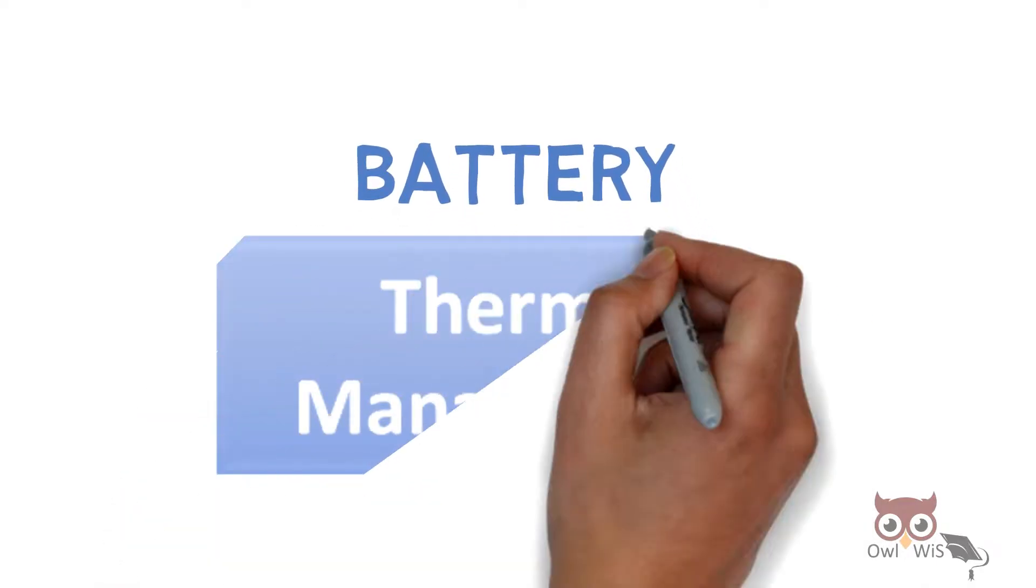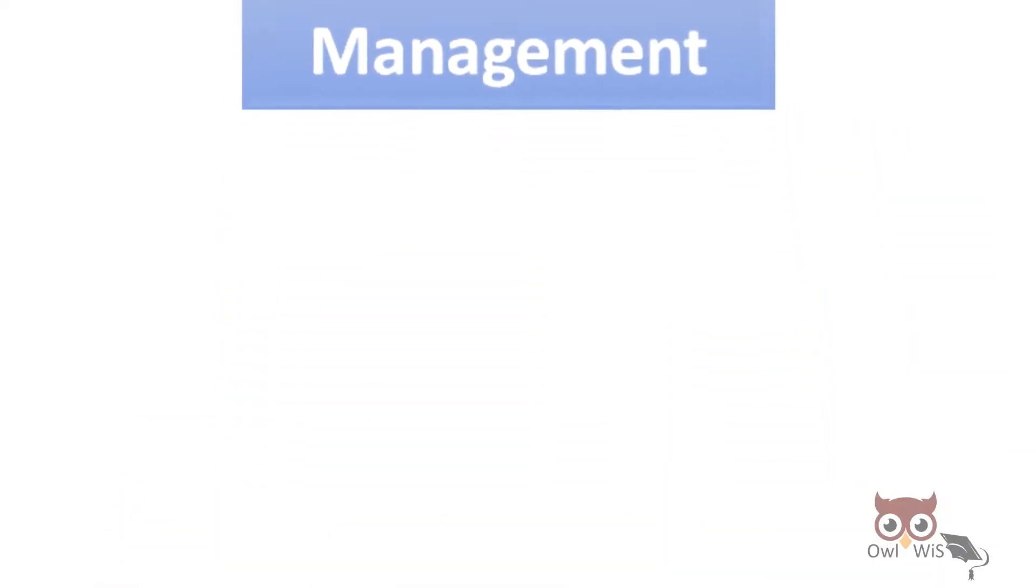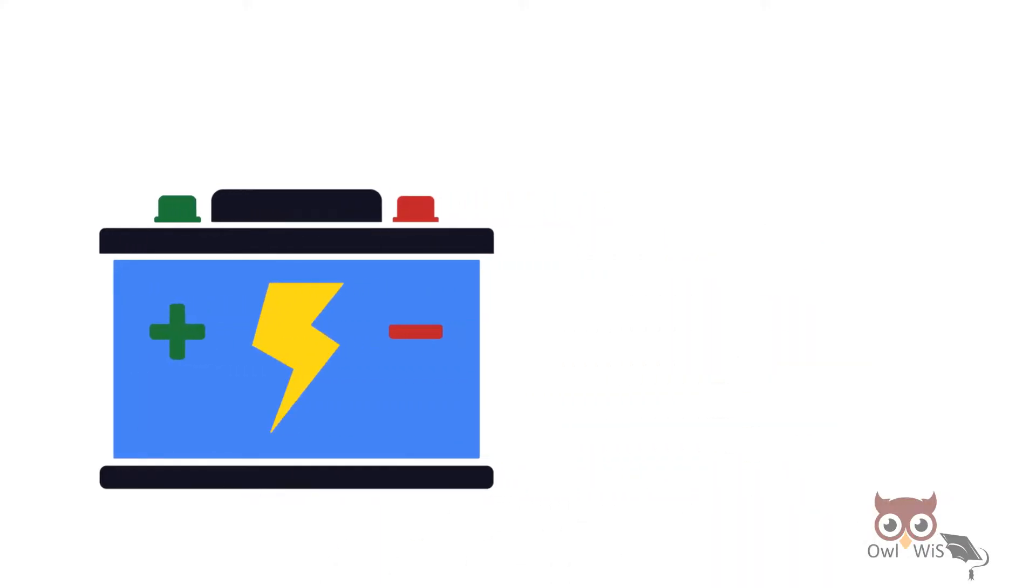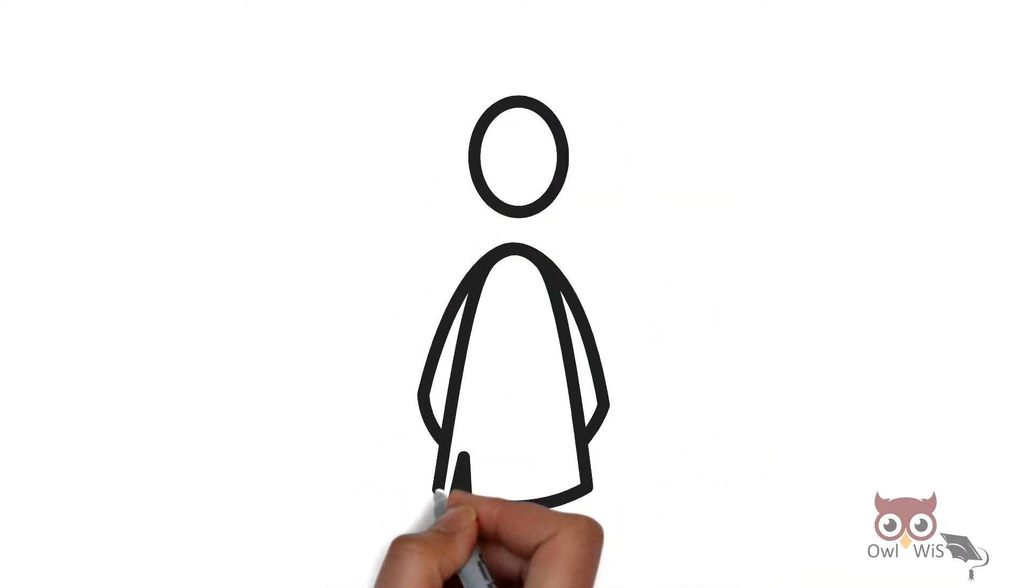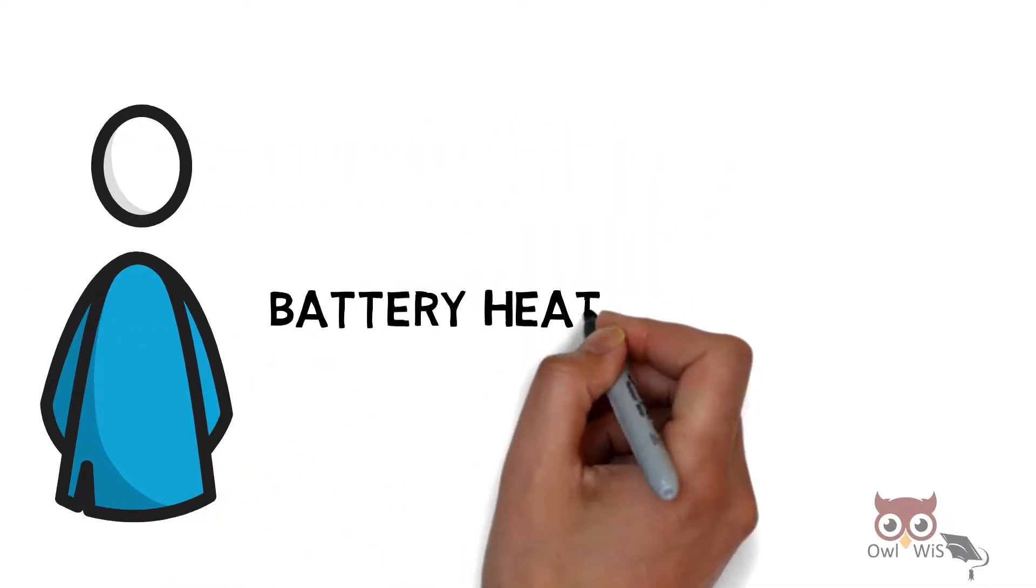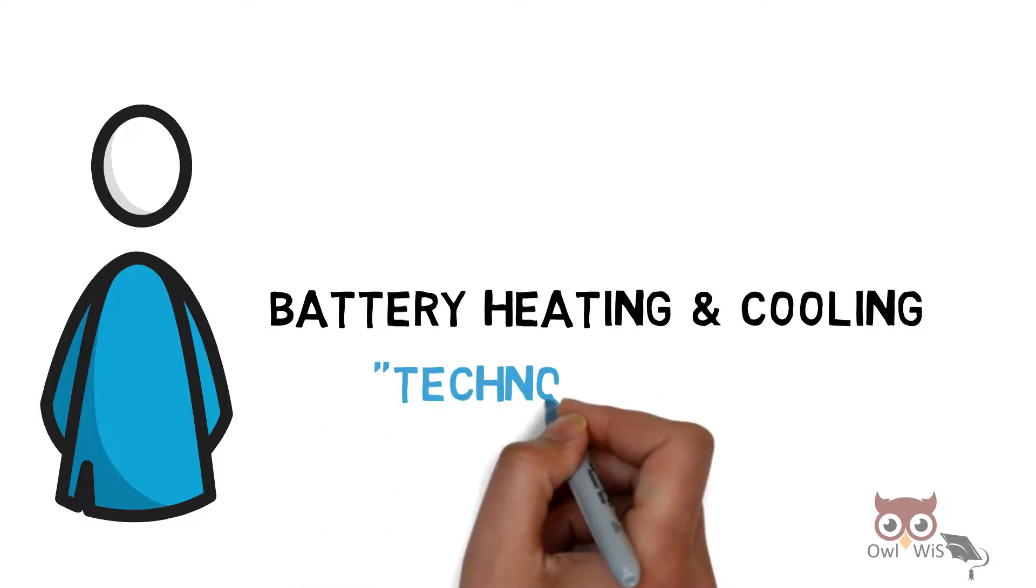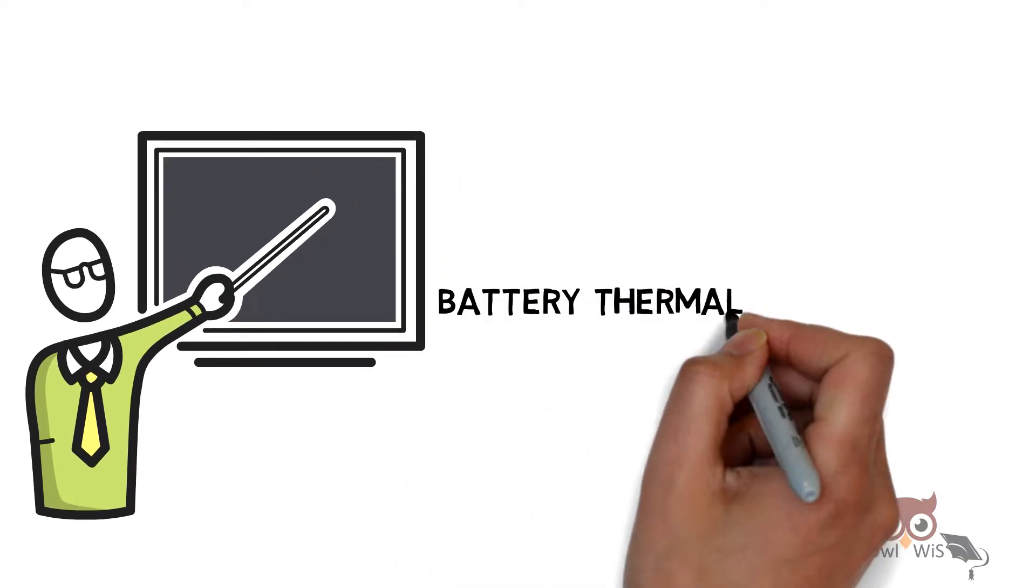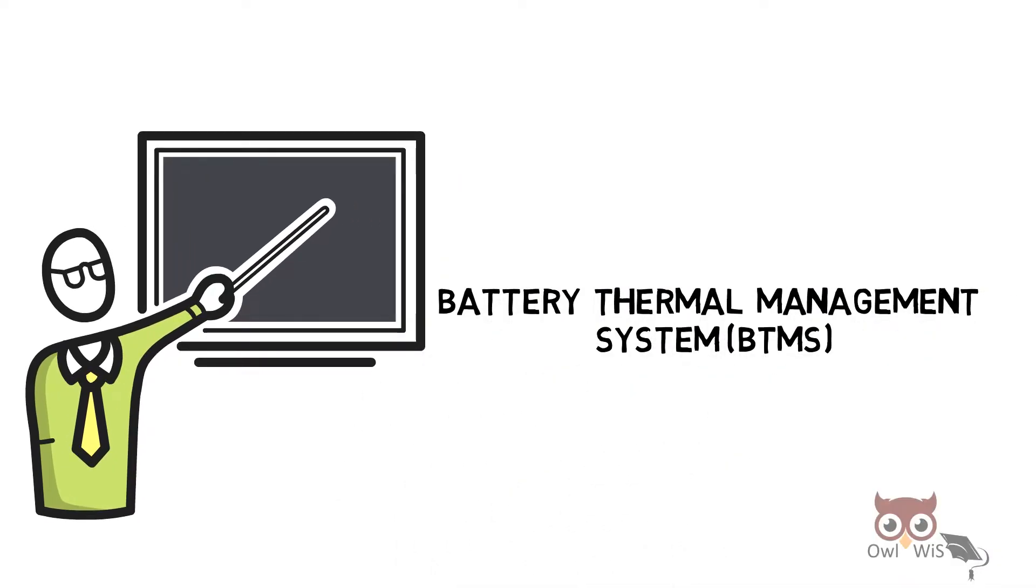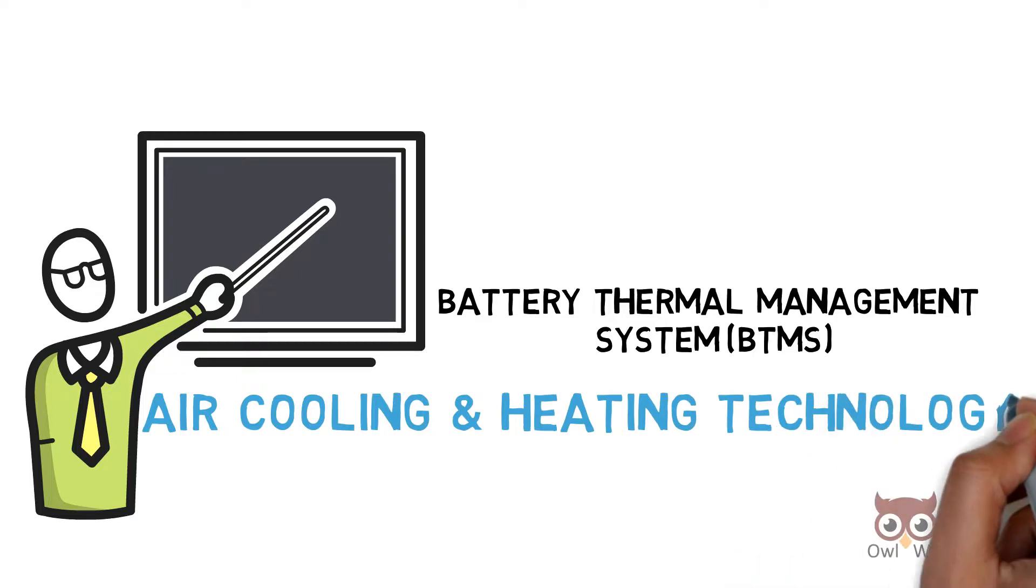Battery thermal management maintains the battery in optimum temperature range. This is achieved by using certain battery heating and cooling technologies. In today's video, let us understand battery thermal management system air cooling and heating technology.